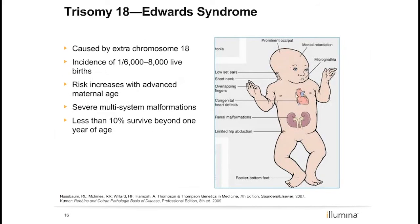Trisomy 18, also known as Edwards syndrome, is more severe and less common than Down syndrome. The incidence is 1 in 6,000 to 8,000, with a correlation between risk for trisomy 18 and advancing maternal age. Individuals with trisomy 18 may have severe birth defects of multiple organ systems, including heart, genitourinary, respiratory, neurological, and digestive. The majority of individuals with trisomy 18 do not survive to term or die within the first year of life.